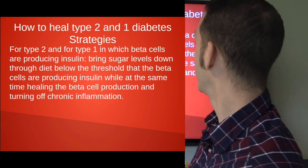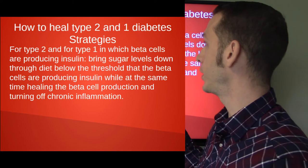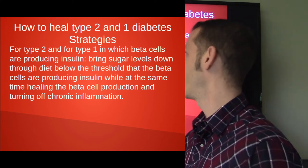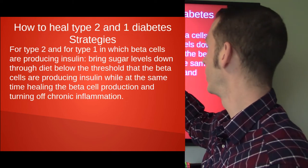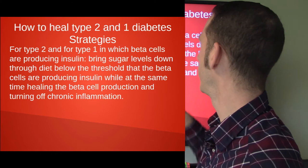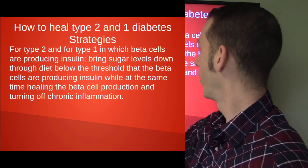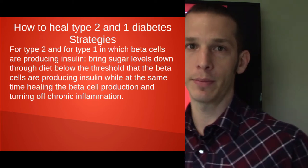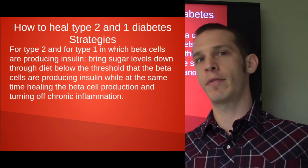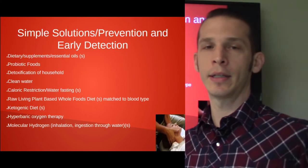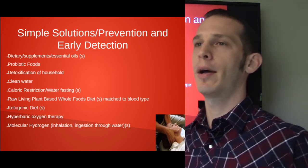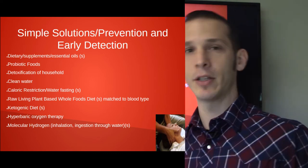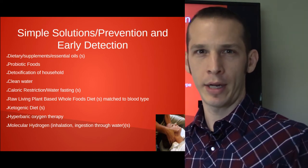How to heal from type 2 and type 1 diabetes. The overall strategy for type 2, and for type 1 patients who are still producing insulin: bring sugar levels down through diet below the threshold that the beta cells are producing, while at the same time healing the beta cell production and turning off chronic inflammation. If you accomplish those, you're effectively taking care of the problem. Tonight I'm going to dive deep into nutritional aspects.